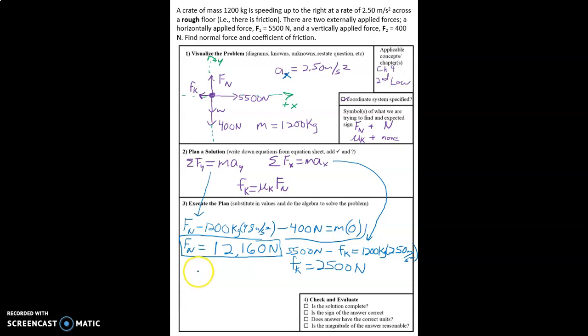Now that is not what we were asked to find. We were not asked to find the force of friction but rather the coefficient of friction. And so now we take our final equation here. We see 2500 newtons equals μ_k times 12,160 newtons. We divide both sides by 12,160. We get 0.206.